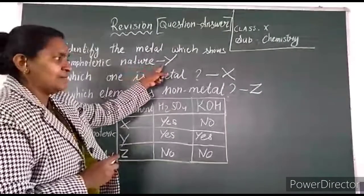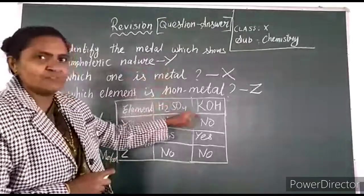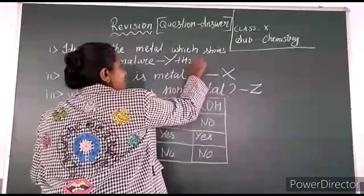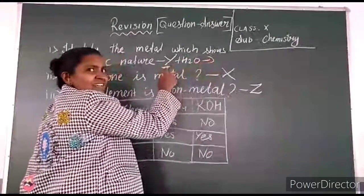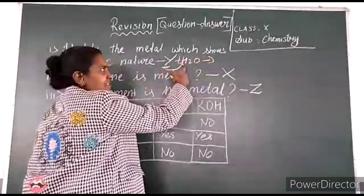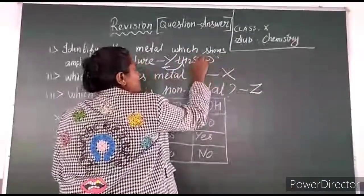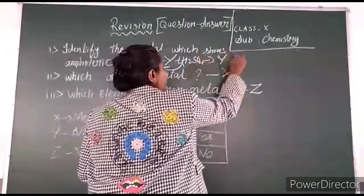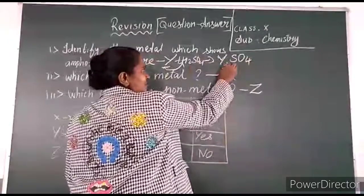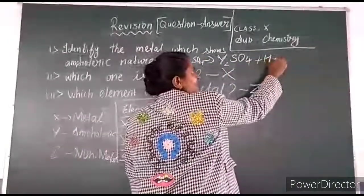Write the reactivity of the amphoteric element with acid as well as base. For the reaction with acid: generally, a metal displaces hydrogen. So Y reacts with H₂SO₄ to give YSO₄ — sulphate valence two — plus hydrogen gas. The gas eliminated in this reaction is hydrogen gas.